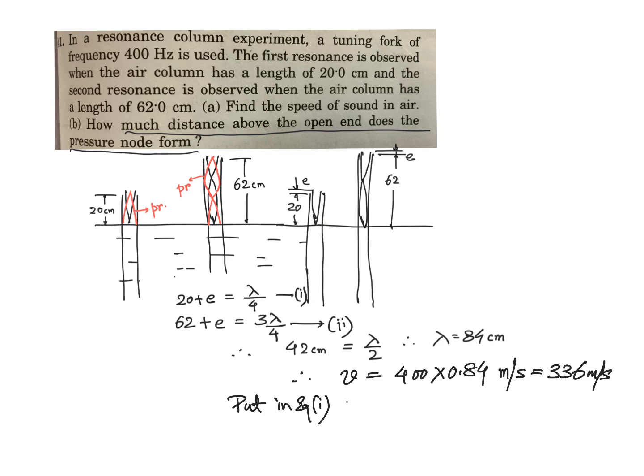Now, put in equation 1. You get E is equal to 84 by 4 minus 20 cm. That is 1 cm. E the end correction happens to be 1 cm, which is what is needed in part B. The distance above the open end, the pressure node or the displacement anti-node.